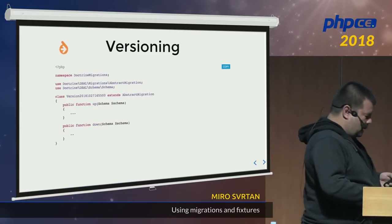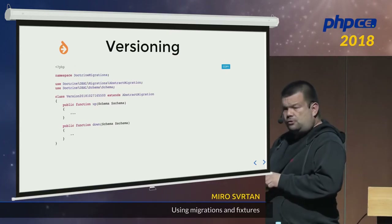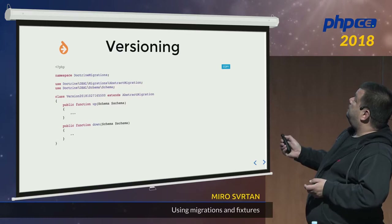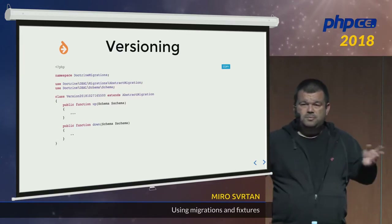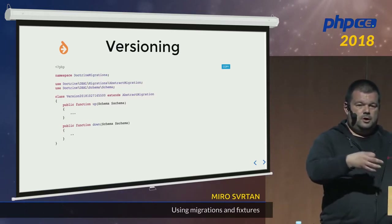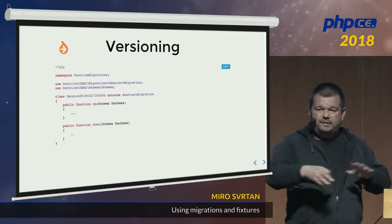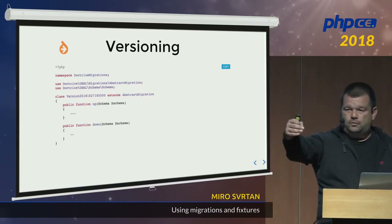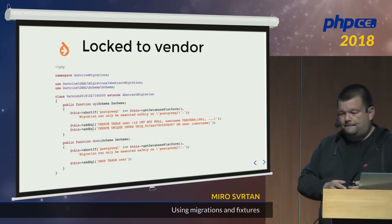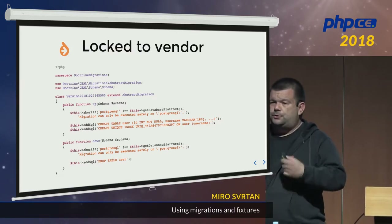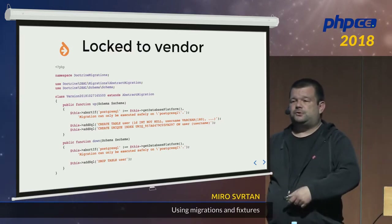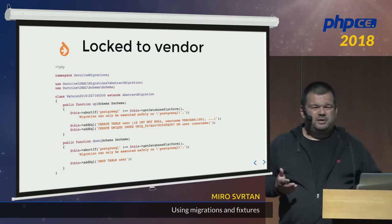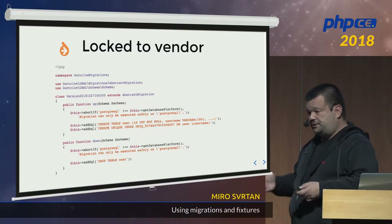I lied a bit in the previous slides — it's not version 2, 3, 4, 5. What Doctrine will say is the current date, hour, minutes, and seconds. That means if you have multiple teams working on the same app, they can all generate migrations independently — there's not going to be a conflict on the number. They run sequentially, from the lowest number to the highest. Unfortunately, they are locked to the vendor, so if you're used to MySQL, you can't run those migrations on Postgres. Which is not often a problem, because people usually don't change database servers that often.